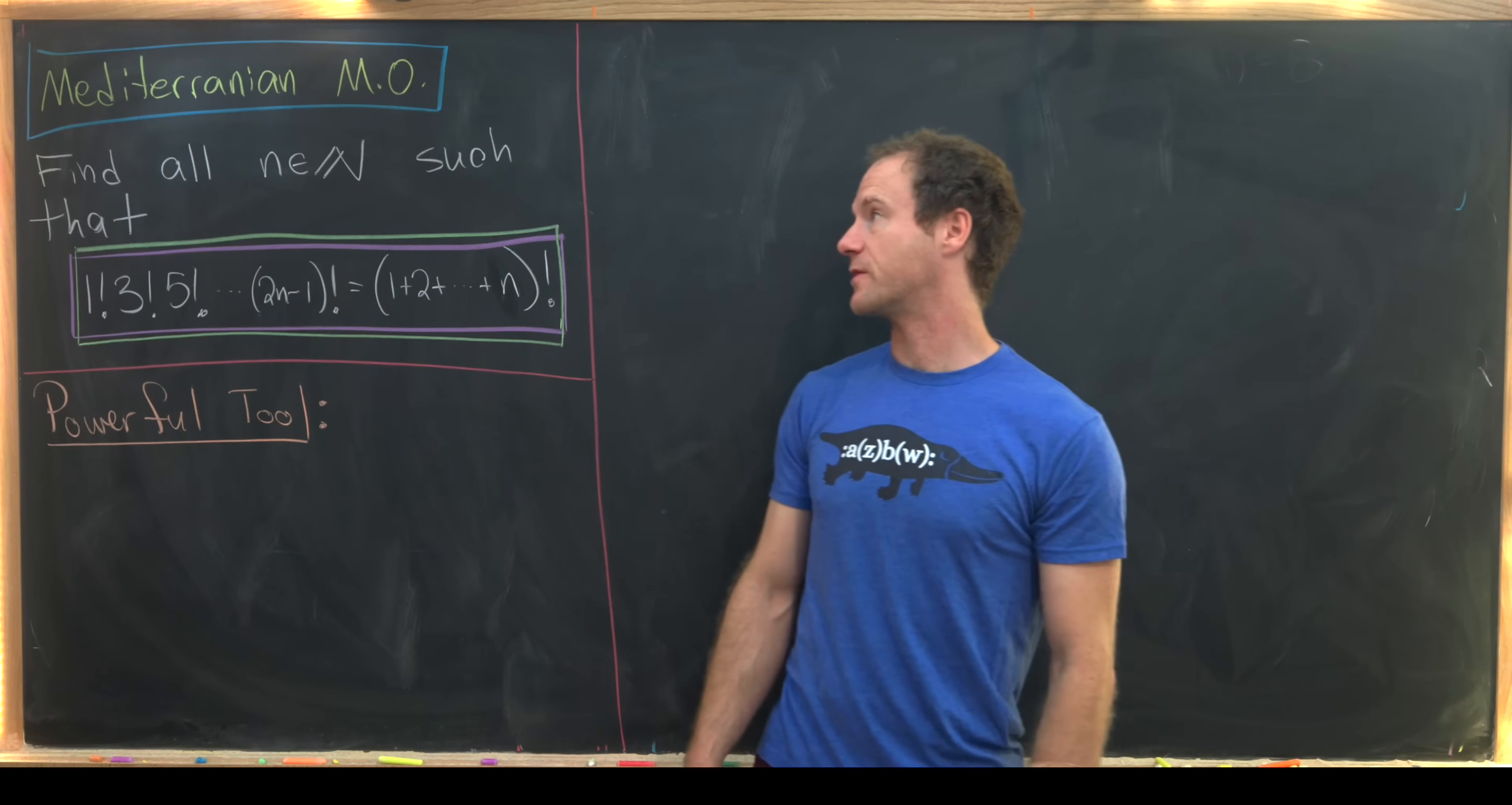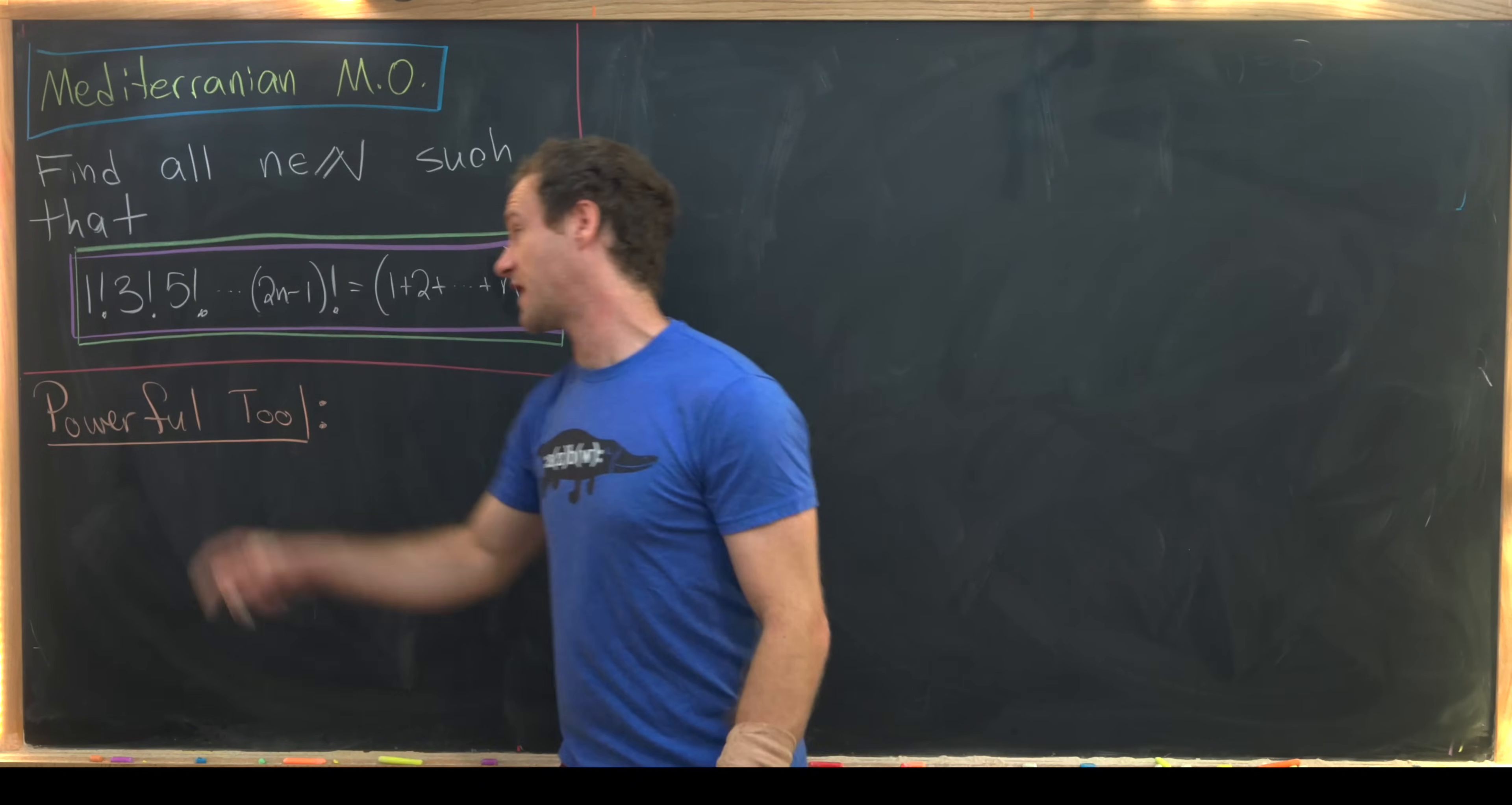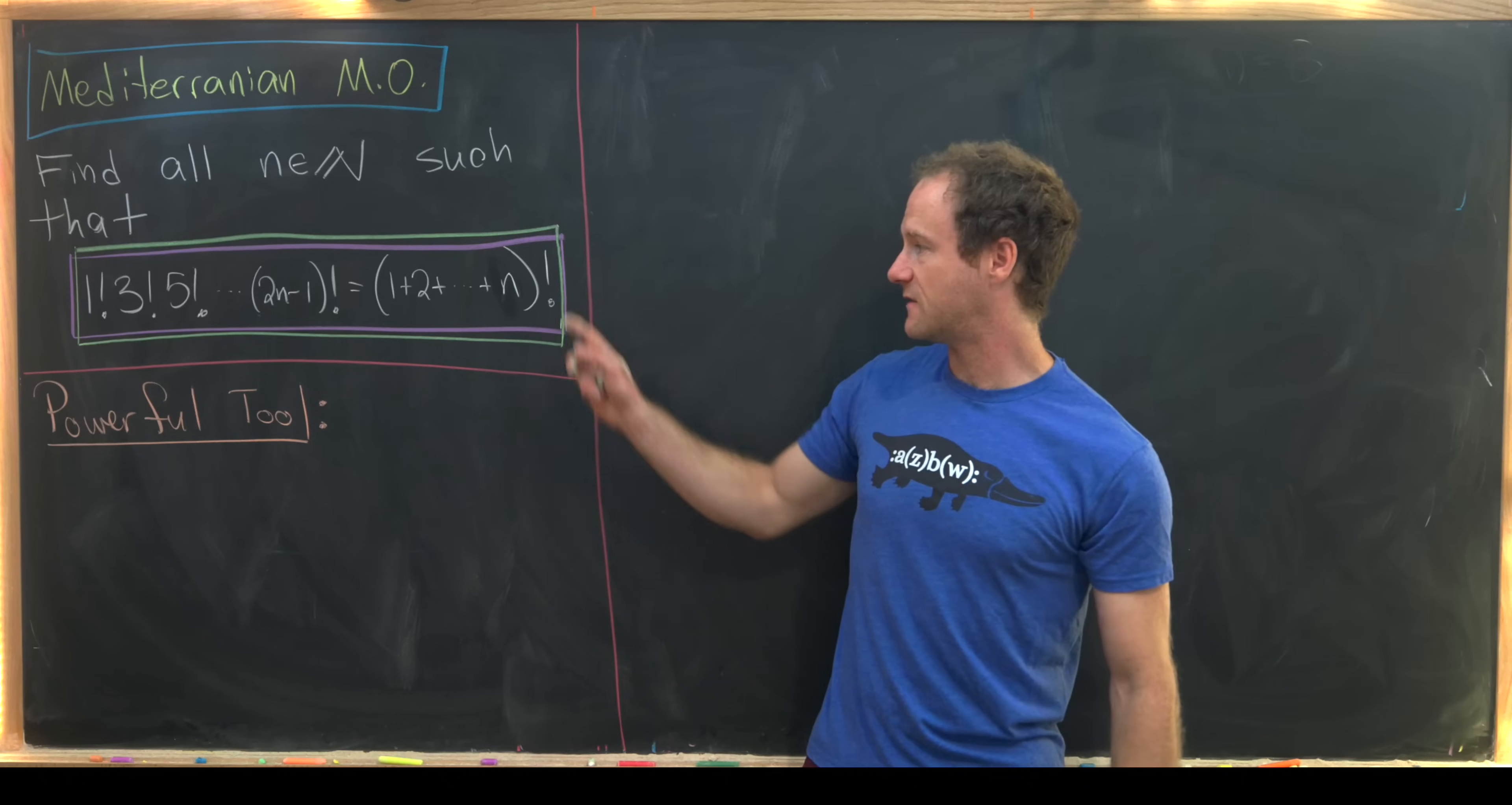Here we're going to look at a little number theory problem from the Mediterranean Math Olympiad. Our goal is to find all natural numbers n such that this factorial of factorials object given by 1 factorial times 3 factorial times 5 factorial all the way up to 2n minus 1 factorial is the same thing as this triangular number 1 plus 2 plus 3 all the way up to n factorial.